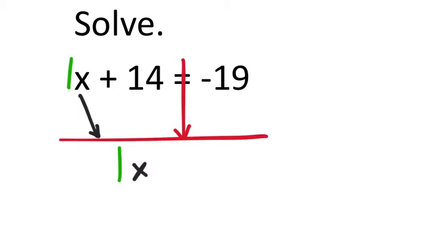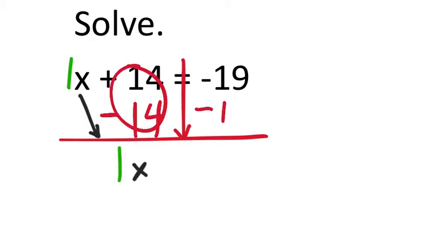That's what we're doing here. That's plus 14, so I'm going to subtract 14 from both sides, which will make that zero. Zero right there — but if I do it to one side, that's the Principle of Equality — I must do it to the other side. So that's now negative 19 minus 14, which is negative 33.